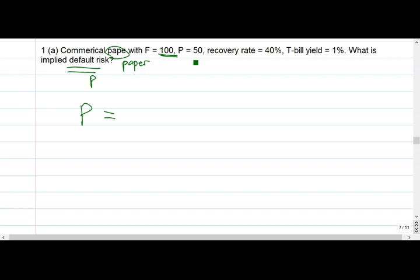It didn't say anywhere, but let's assume it's one year. So the price, which is by the way 50, equals 100 with probability 1 minus P.